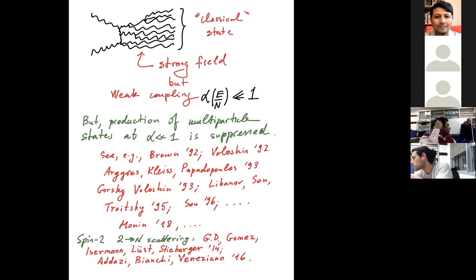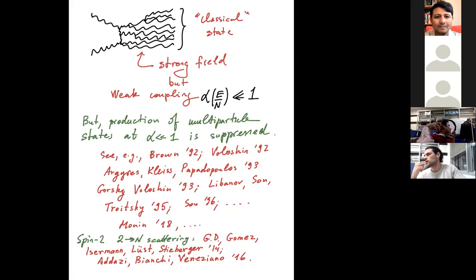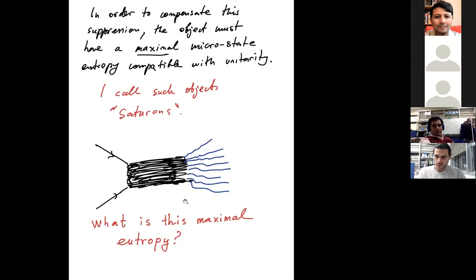The physics here is unusual: extreme weak coupling but strong field and high occupation number. One might ask whether production of high occupation number classical states is exponentially suppressed in weakly coupled theories — and indeed it is. However, what is specific to classicalizing theories is that the produced state has maximal entropy, which overcompensates the exponential suppression, a characteristic of non-perturbative processes.